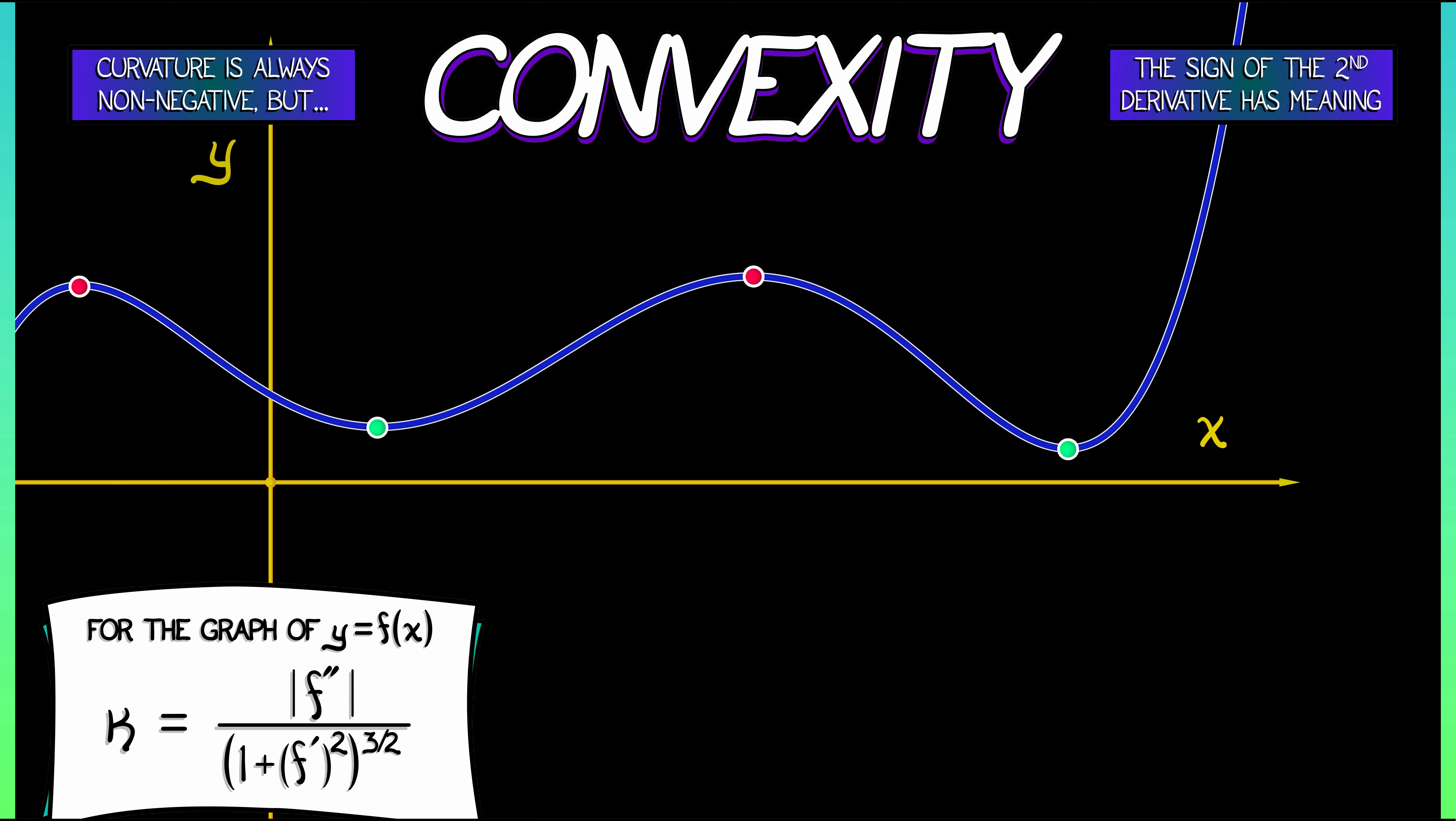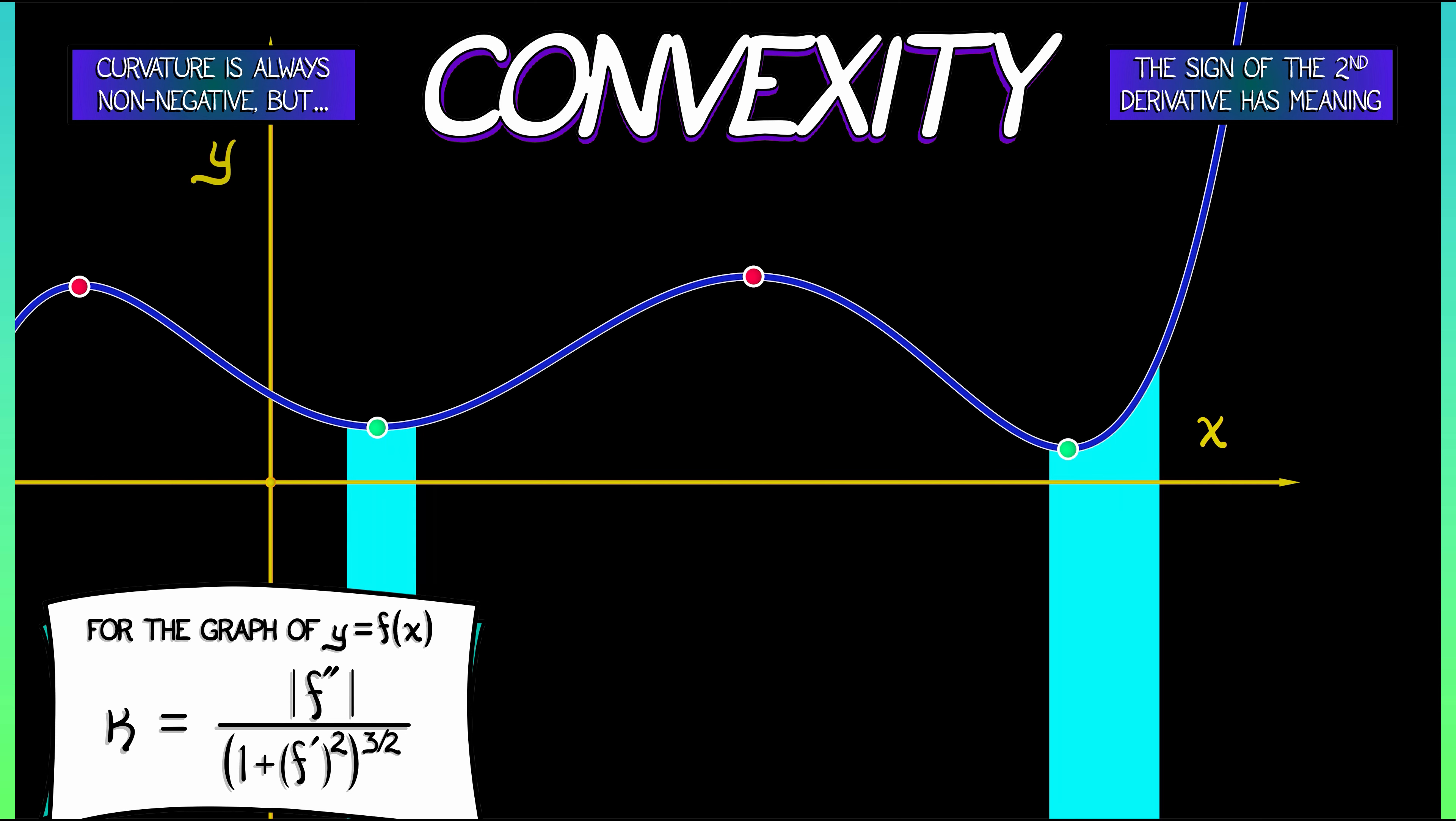That has meaning in terms of convexity. You may remember this from when you first learned calculus. In regions where the second derivative is positive, then we say that the graph of the function is concave up.